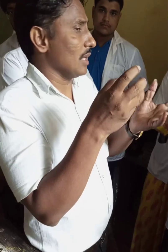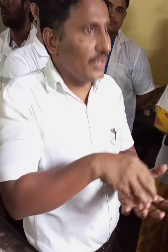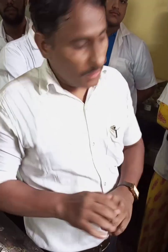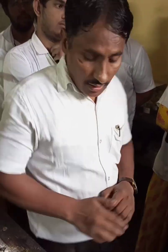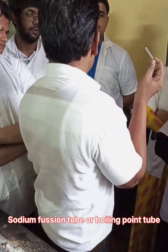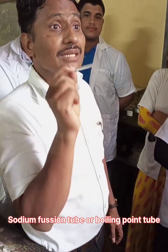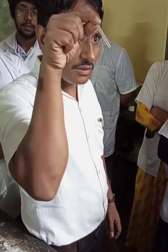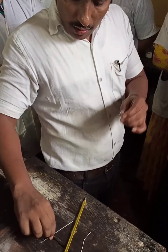To find the boiling of a liquid, we know that if we transfer gas into the liquid, bubbles appear — we can see the bubbles. We are using that phenomenon to observe the boiling point. This is your sodium fusion tube, which can also be called a boiling point tube because the liquid is going to boil here.